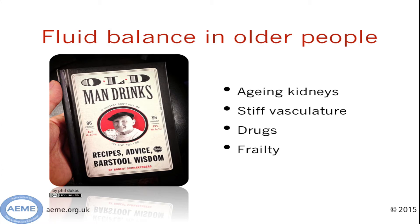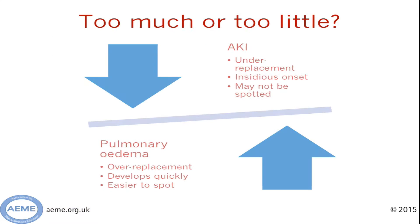First, let's think about how the body changes with age with respect to fluid balance. Ageing kidneys have fewer nephrons so they can't filter large volumes and concentrate urine as easily as when they were younger. Older people's vasculature is less elastic and so cannot respond as quickly to large volume changes. Many older people are on diuretics or other drugs that affect the renin-angiotensin system, and this will also affect their response to fluid challenges. Finally, frail older people have little physiological reserve and the kidneys are particularly affected by this.